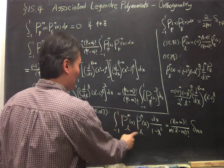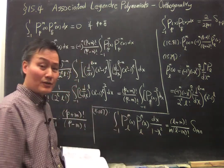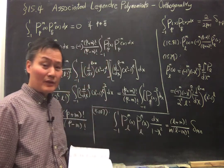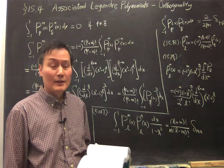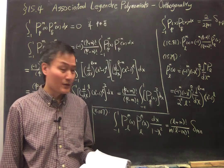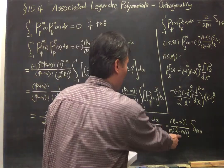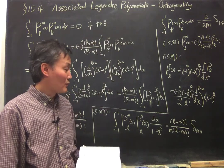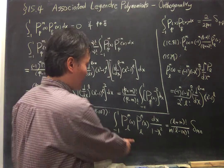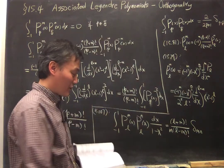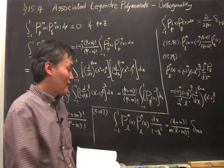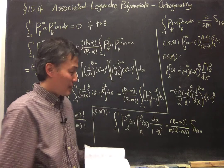This is integrating 1 minus x square. The orthogonality can be seen easily using the associated Legendre equation. To get to this constant you need some work. This formula is not commonly used.